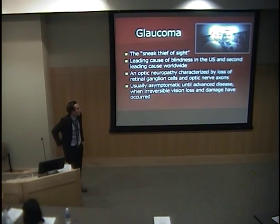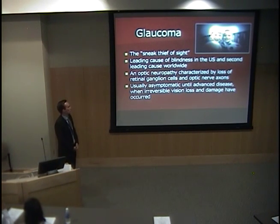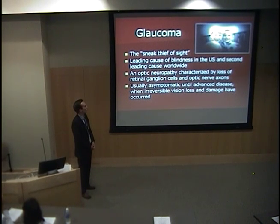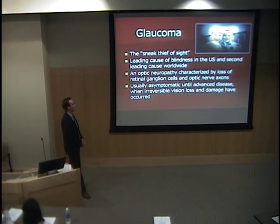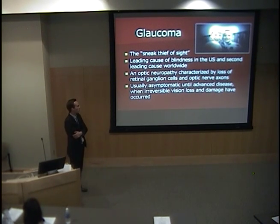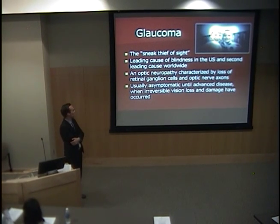Glaucoma is often referred to as the sneak thief of sight because it has an insidious onset. It starts in the periphery of the vision, as you can see in this picture showing what someone with advanced glaucoma would see. It's an optic neuropathy characterized by loss of retinal ganglion nerve cells and optic nerve axons. Vision loss is irreversible and permanent, and patients are often asymptomatic and don't notice the disease until it is advanced.